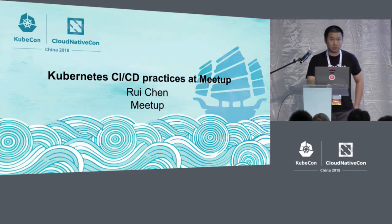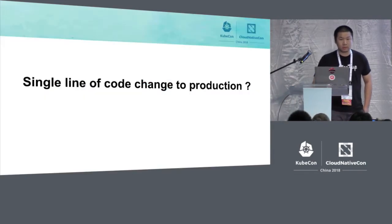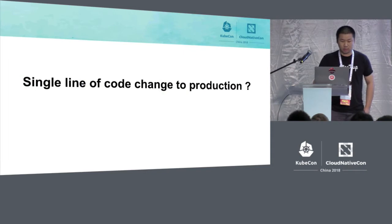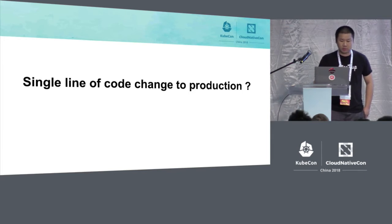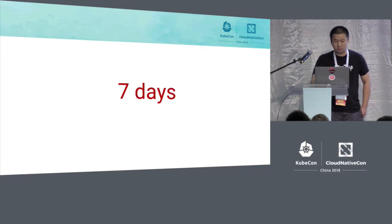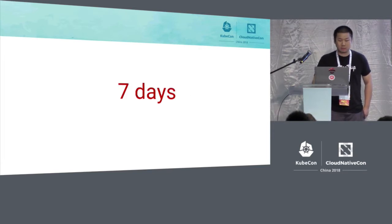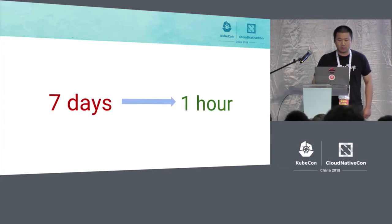This is an end-user perspective on deploying applications. Before I jump into my story, I want to ask a simple question: when you push a single line of code change — either a configuration change, a code change, or just a typo to production — how long does it take? For us, we used to take seven days, including bug fixes or feature releases.